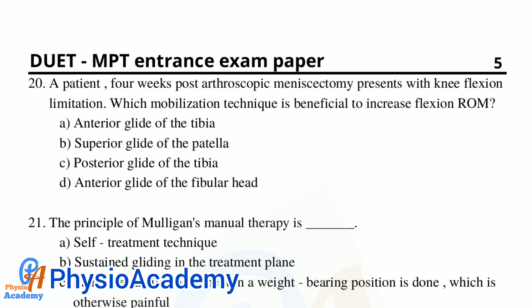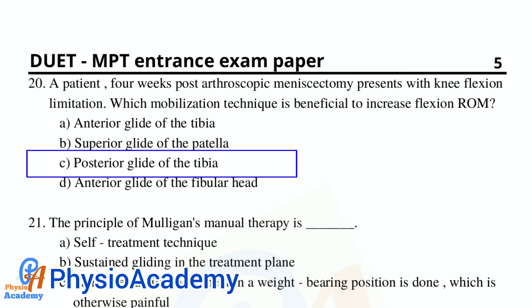Question number 20: A patient 4 weeks post arthroscopic meniscectomy presents with knee flexion limitation. Which mobilization technique is beneficial to increase knee ROM? Option A: anterior glide of the tibia. Option B: superior glide of the patella. Option C: posterior glide of the tibia. Option D: anterior glide of the fibular head. The correct answer is option C, posterior glide of the tibia.